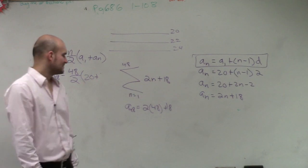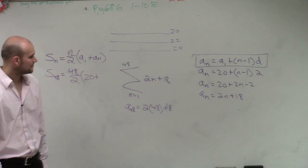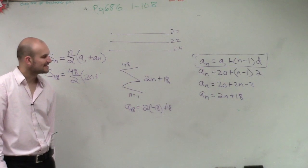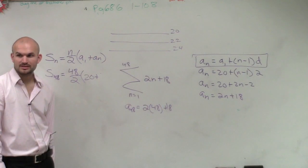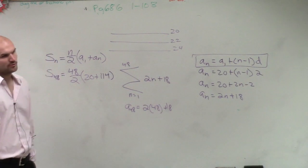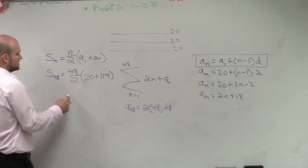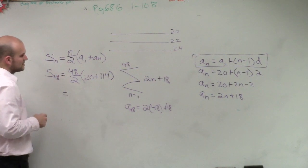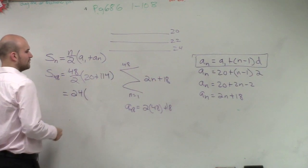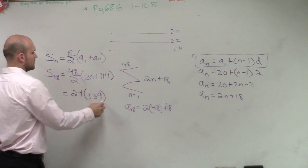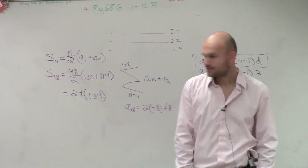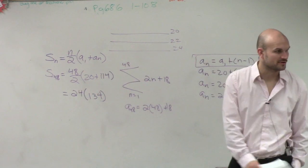So we have 96 plus 18 would be 114. So plus 20 would be 134. This becomes 48 divided by 2 is 24. So 24 times 134. Anybody in our calculator have 24 times 134 equals? 3,216.